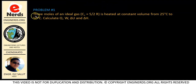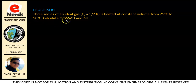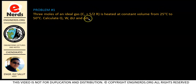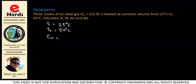For problem number one, we have three moles of an ideal gas with CV equal to 5/2·R. It is heated at constant volume from 25 degrees Celsius to 50 degrees Celsius. Calculate delta U, W, delta H, and Q. We have our initial temperature T1 of 25 degrees Celsius and final temperature T2 of 50 degrees Celsius, and our CV equals 5/2·R.